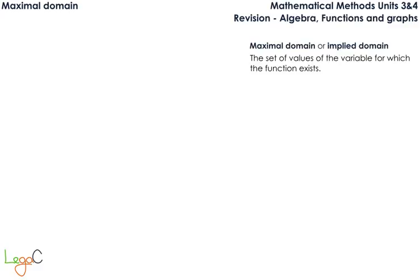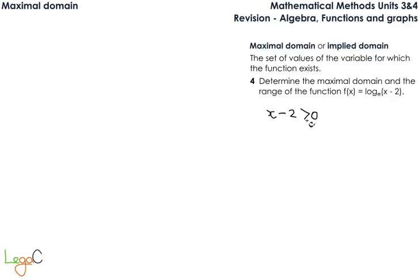The next example is a logarithmic function. For logarithmic functions, we do a similar approach to determine the maximal domain. The quantity inside the logarithm has to be greater than 0. Notice that this value cannot be 0. Actually, the logarithm is undefined when this value inside equals 0. So if we solve this inequality for x, we have x greater than 2, which gives us the domain from 2 to infinity, where 2 is an open bracket.